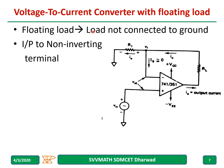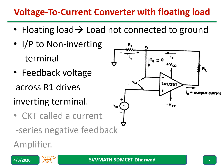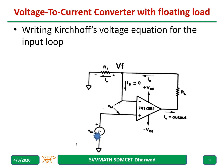Floating load means the load is not connected to ground. The input is given to the non-inverting terminal of the operational amplifier, and the feedback voltage across R1 drives the inverting terminal. This circuit is also called a series negative feedback amplifier. Let us write the Kirchhoff voltage equation for the input loop.